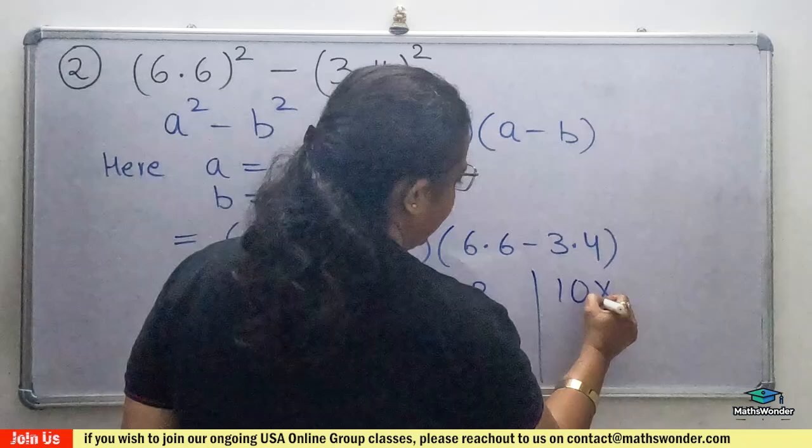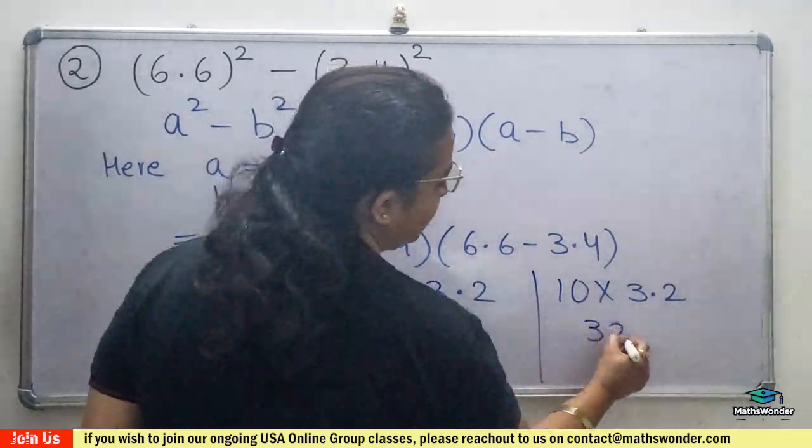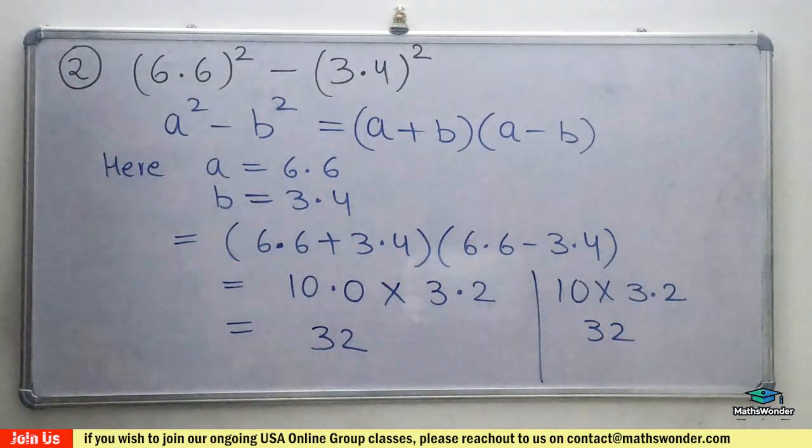Or 10.0 you can write it - 10 only. 10 times 3.2 also gives 32, so both are the correct variations.